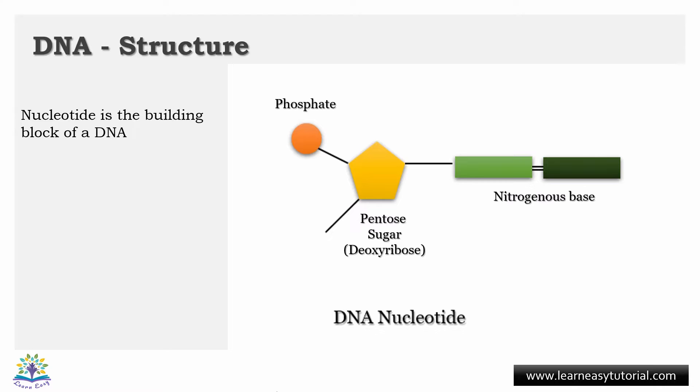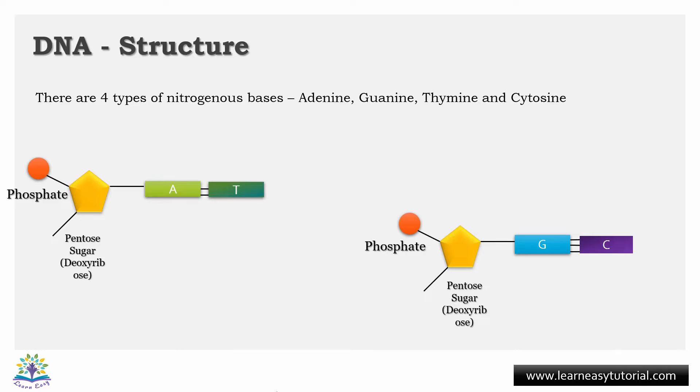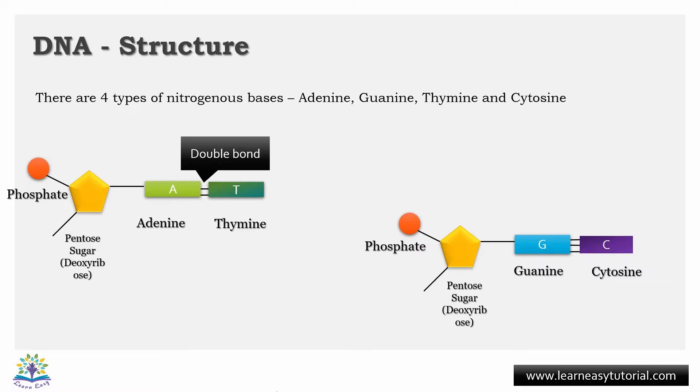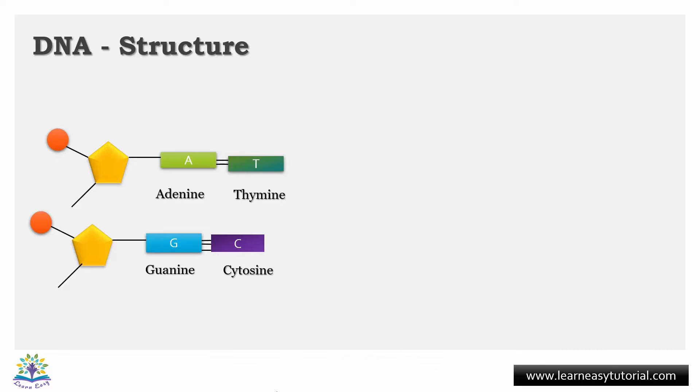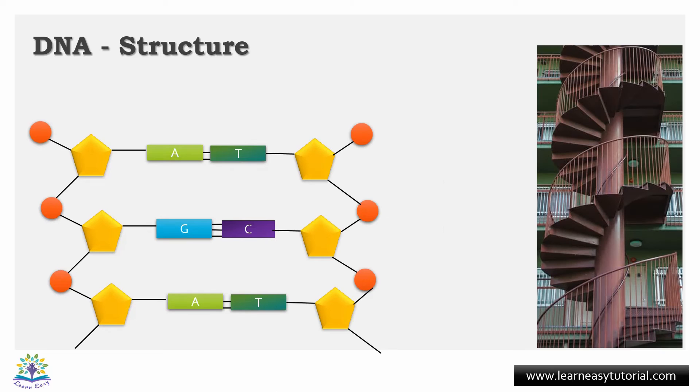There are four types of nitrogenous bases: adenine, thymine, guanine, and cytosine. Adenine always pairs with thymine, joined by a weak hydrogen double bond, whereas guanine always bonds with cytosine with the help of a triple hydrogen bond. These pairs are known as base pairs.